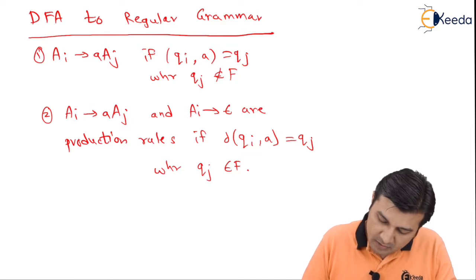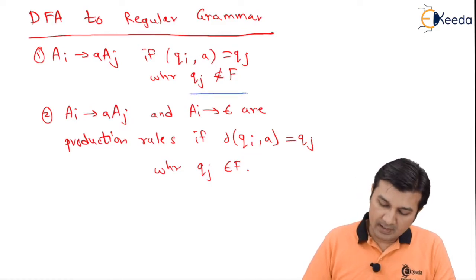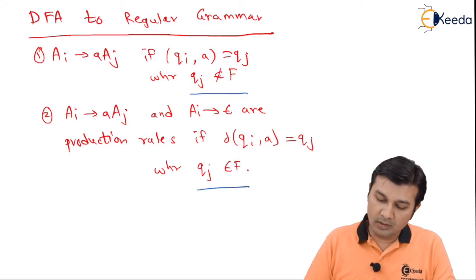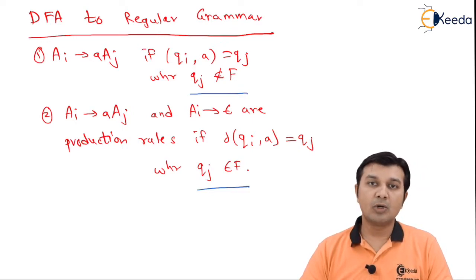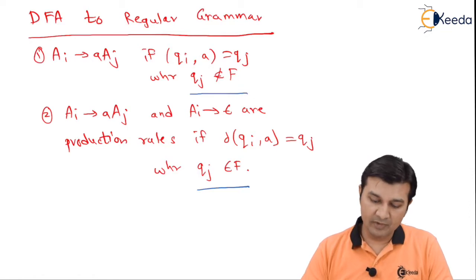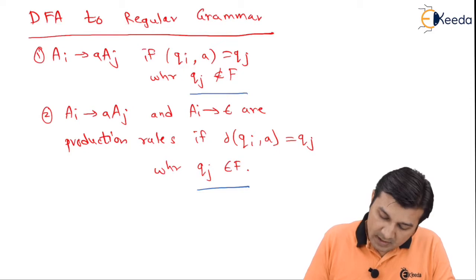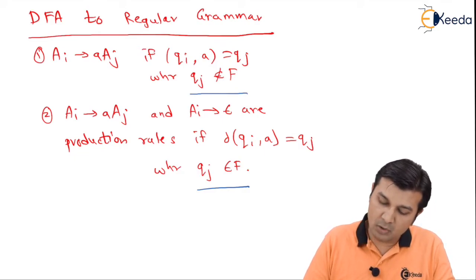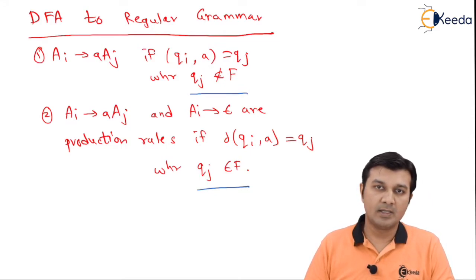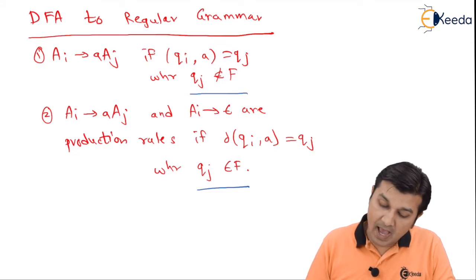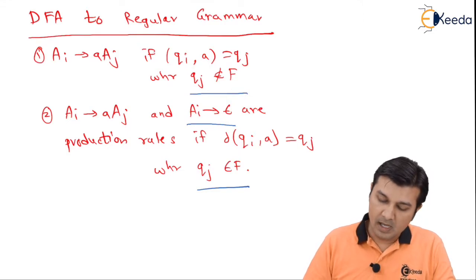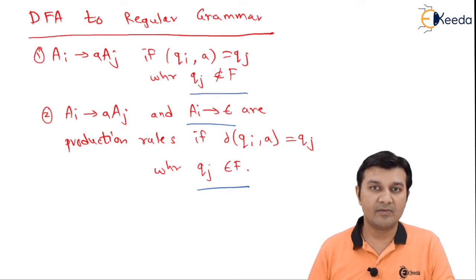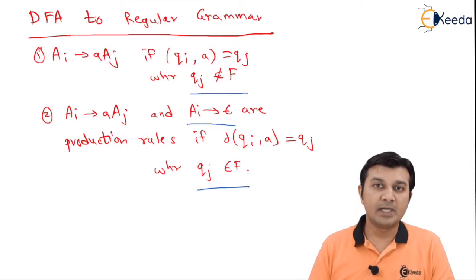The first rule says where a state is not belonging to the final state, and the second rule says that the state is belonging to the final state. So if state Qj is belonging to the final state or not belonging to the final state, depending on that we have two rules. My first rule says the production is Ai → aAj if Qi on receiving input symbol a goes to state Qj, where Qj is not the final state. The second rule says Ai → aAj and additionally Ai → a are the production rules if Qi on receiving input a goes to Qj and Qj is the final state.